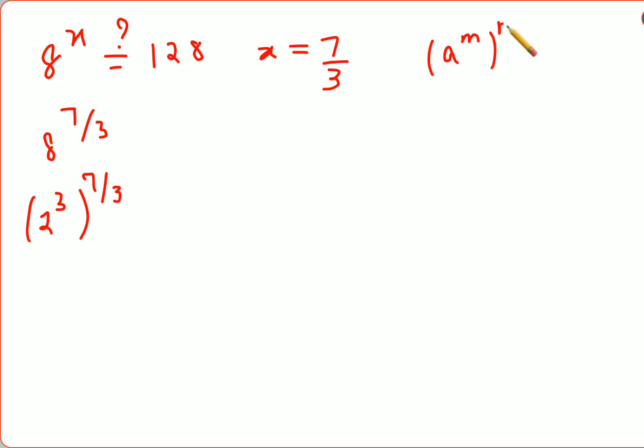Now in indices all of us know a raised to m the whole raised to n can be written as a raised to m into n. So this comes out to be 2 raised to 3 into 7 upon 3, and this and this gets cancelled. So you got 2 raised to 7, and 2 raised to 7's value is 128, and that is the RHS.